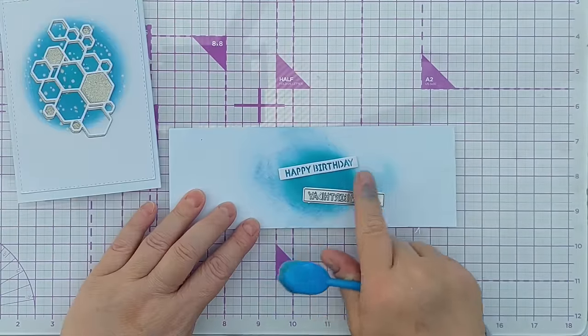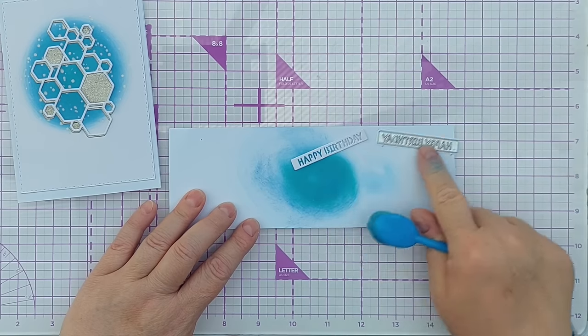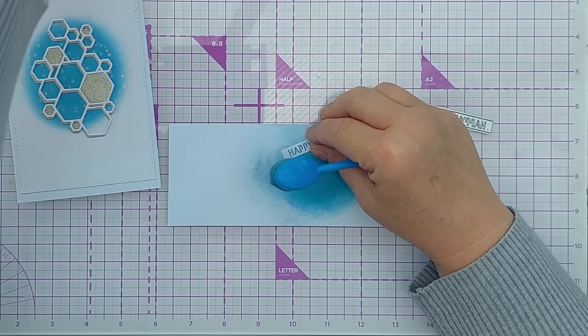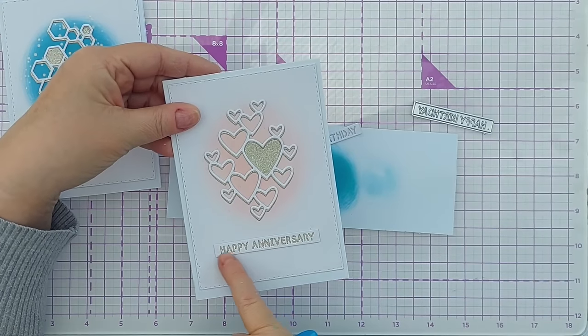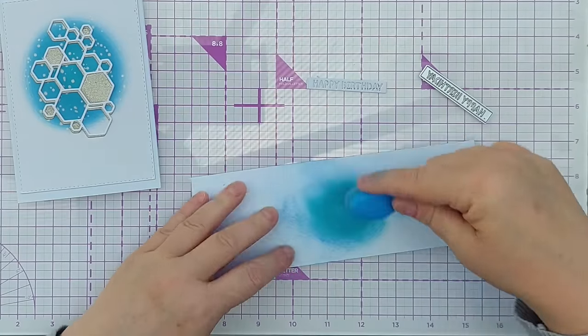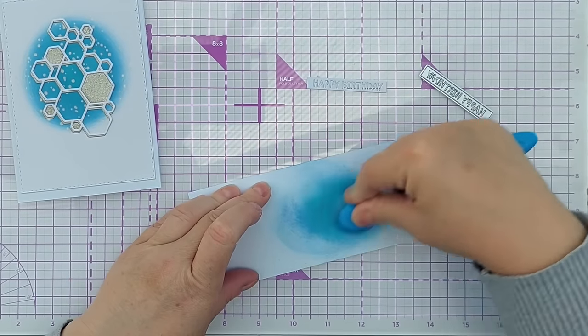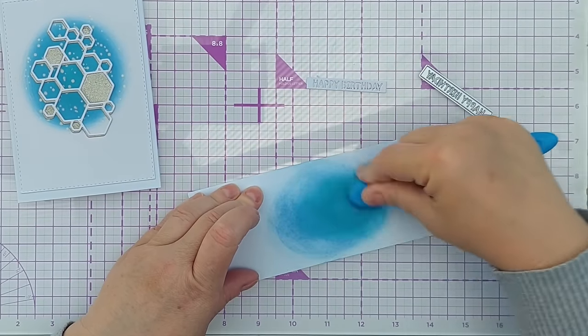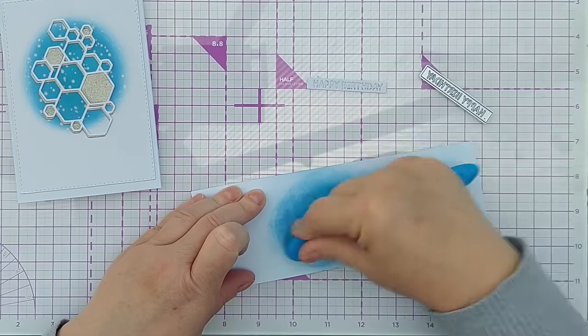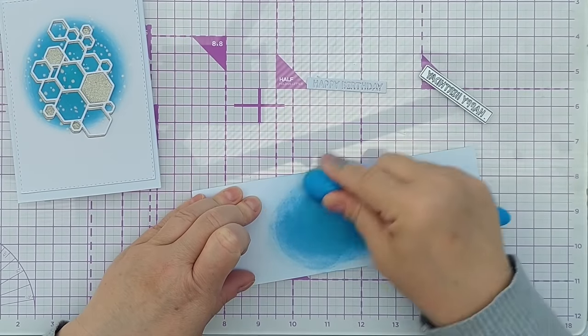For the sentiment I've chosen this happy birthday die. And I've die cut it from white cardstock. On the original card I backed it with the gold glitter, but I think on this one I'm going to back it with some broken china and tumbled glass. So I'll give that a really good coating.